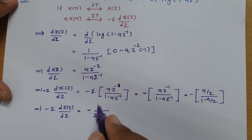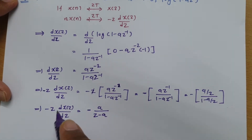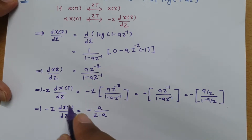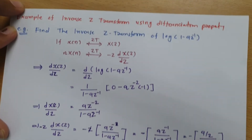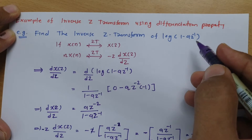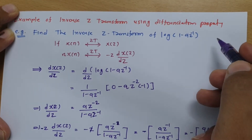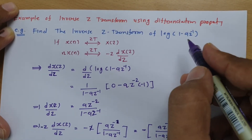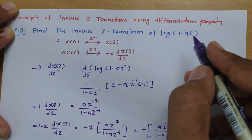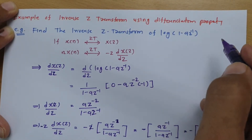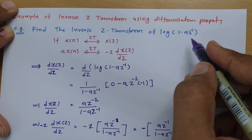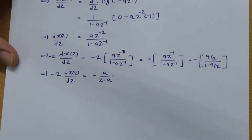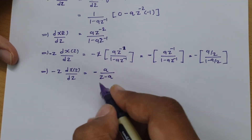Now we can take the inverse z-transform so that we can find n·x(n). We also need to check whether any ROC is given in the question. Here there is no ROC given, which means we need to consider this a right-sided signal. If ROC is given we use that, but if not, we always assume the signal is right-sided.